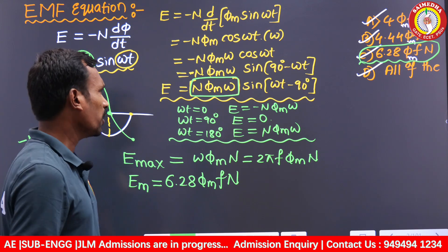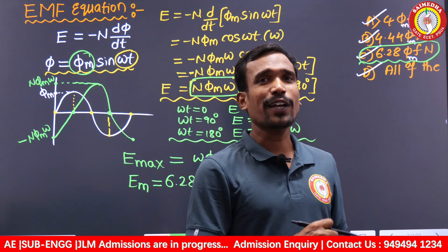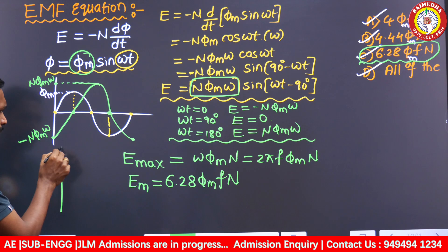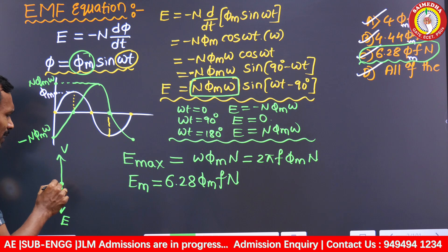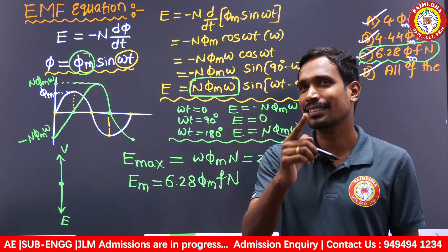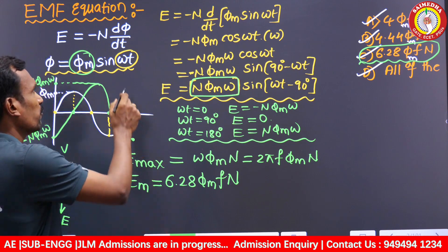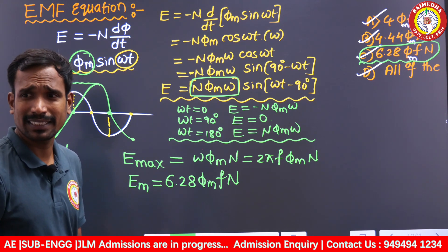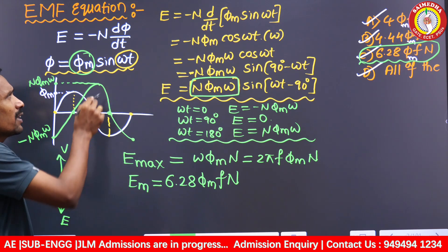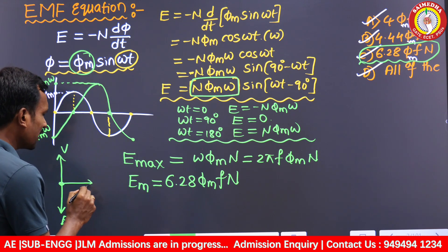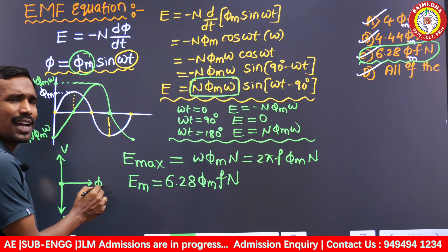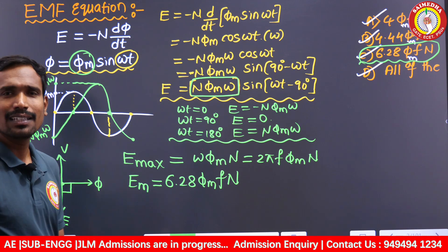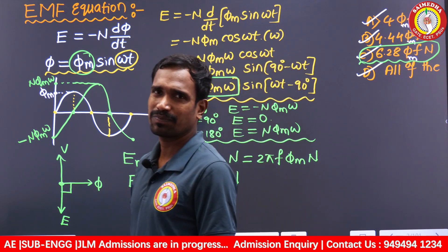From the EMF equation, you can analyze the phase shift. The phase shift between supply voltage and induced voltage is 180°. More importantly, the phase shift between flux and induced EMF: since flux is at ωt but induced EMF is at (ωt − 90°), the EMF lags the flux by 90 degrees.